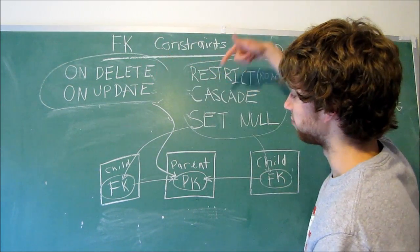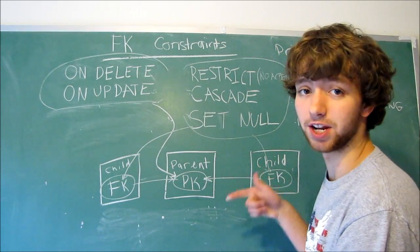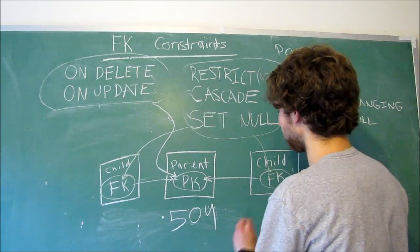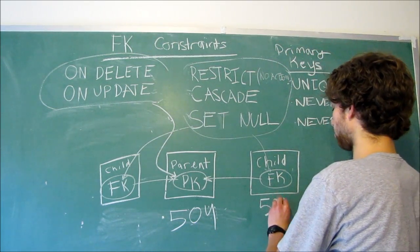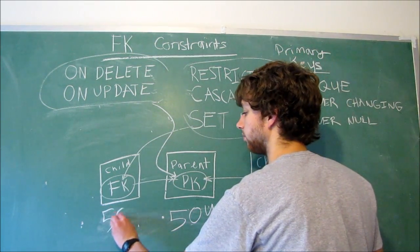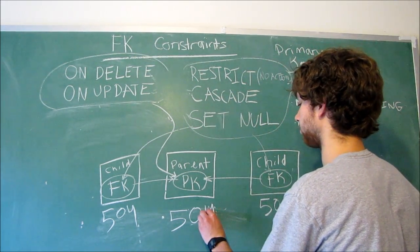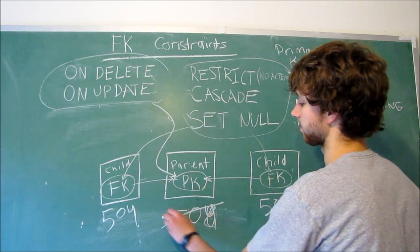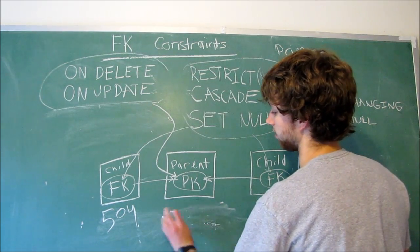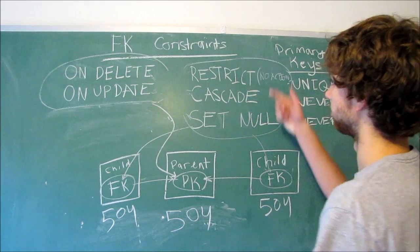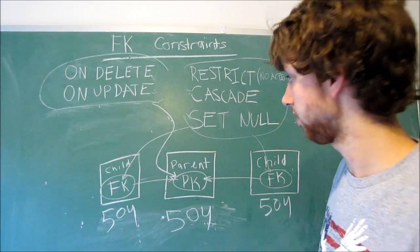Now, RESTRICT ON UPDATE, if we updated that parent and changed their primary key, so let's say we changed 504, and these children both reference 504 with the foreign key, and then we changed this to 508, and it's not going to work, and it will go back to what it was originally because we have it RESTRICT. We're not going to let that happen, you see?